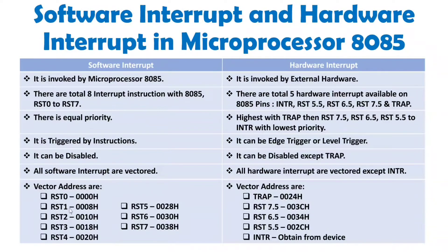RST0 transfers to 0000 hex. RST1 transfers to 0008 hex. RST2's address is 0010 hex — each address increments by 8 in hex. Following this sequence, RST7 has the address 0038 hex.